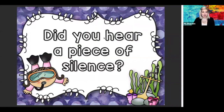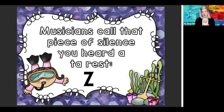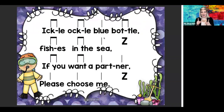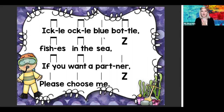Did you hear a piece of silence? I bet you did. Musicians call that piece of silence a ta-rest. It looks like a Z when we write it out in notation. Ta-rest. Now when we get to that Z, we make the shh sound because there's no words, and we open our hands up because there's no clap either. Let's add that in — here we go.